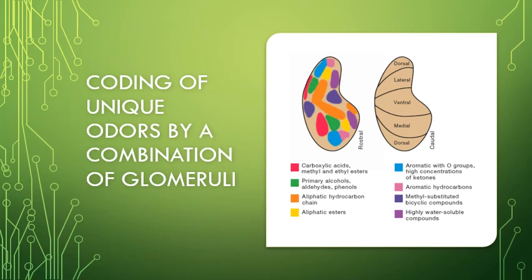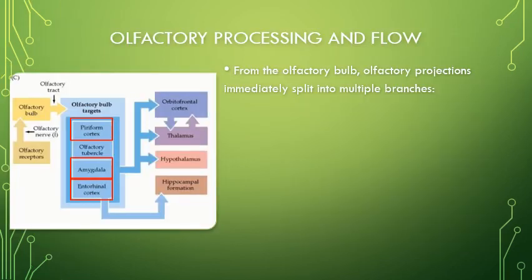The olfactory bulb map shows major groups where certain glomeruli are activated by related sets of chemicals. Carboxylic acids activate one segment; aromatic hydrocarbons activate another. Chemicals similar in structure tend to activate nearby groups of glomeruli. A mixture of an ester and an alcohol activates the combination of two different patterns simultaneously — a beautiful way to represent the chemical structure of the world with a small number of receptors.